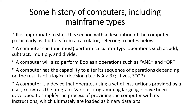A computer also has the capability to alter what it's doing depending on the results of a logical decision — for example, if A is greater than B, then stop. That's one simple example. A computer is a device that operates using a set of instructions provided by a user, known as the program. Various programming languages have been developed to simplify the process of getting data into the computer.